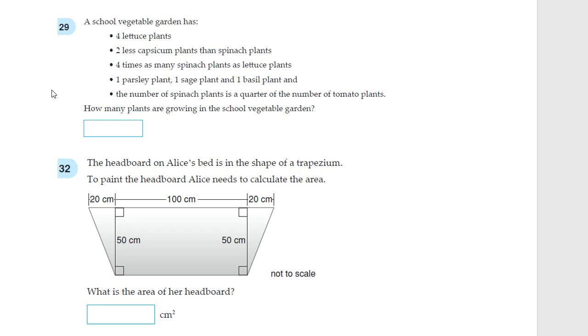Question 29. A school vegetable garden has four lettuce plants, two less capsicum plants than spinach plants, four times as many spinach plants as lettuce plants, one parsley plant, one sage plant, and one basil plant. And, the number of spinach plants is a quarter of the number of tomato plants. How many plants are growing in the school vegetable garden? So, first of all, we know four lettuce plants. Let's write down the poll there. Two less capsicum plants than spinach plants. We can't do that yet. Let's do the next one first.